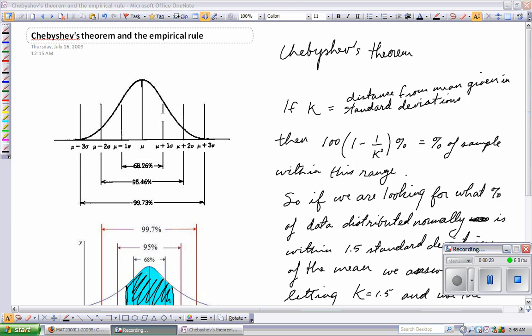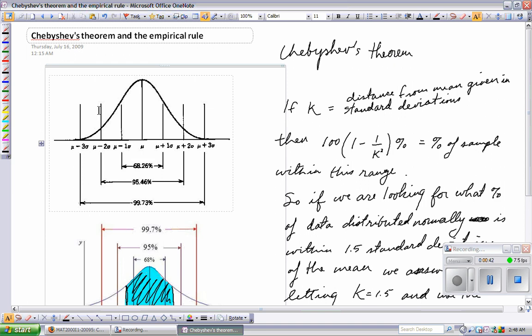The Empirical Rule is really easy to remember. It's 68, 95, 98. When you look right here, you will see that the mean, if something is normally distributed, then here's the normal distribution.